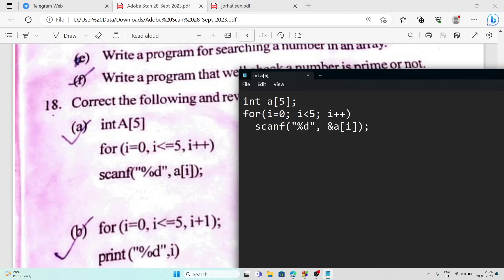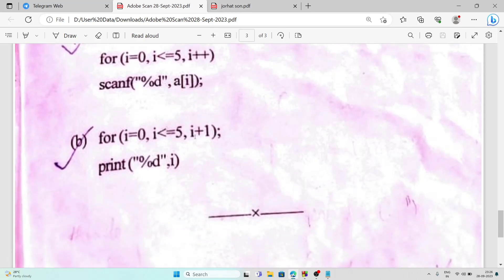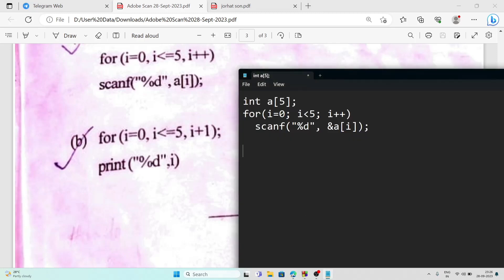Number B, for i=0, i<=5, i+1. There's also a mistake. Answer is for i=0, i<5, then i++. And after that it should be printf, not only print. It should be printf then %d and here a[i]. So this will be the correct answer for question number B.